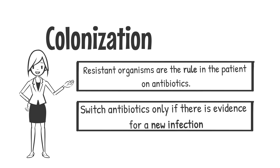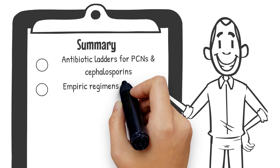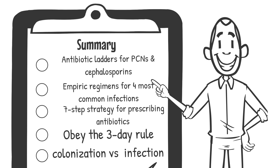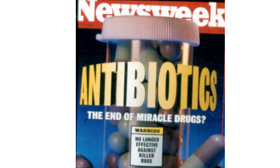We've covered a lot of ground today. Let me summarize. First, we discussed antibiotic ladders that can be used to order antibiotics by breadth of gram-positive and gram-negative spectrum of activity, focusing on penicillins and cephalosporins. Next, I reviewed the empiric regimens for the four most common infections: pneumonia, meningitis, cellulitis, and urinary tract infections. Finally, we described the seven-step strategy for prescribing antibiotics, emphasizing the importance of obeying the three-day rule and differentiating colonization from a new infection. By applying what you have learned today, you can help prevent the development of antibiotic-resistant pathogens, save lives, and prevent the end of the antibiotic era.